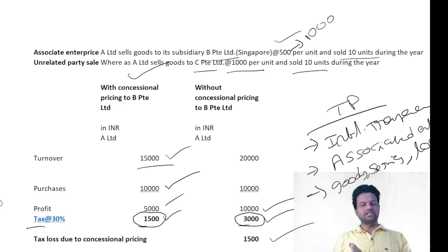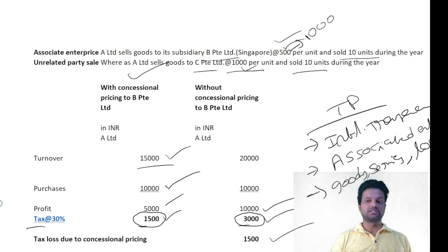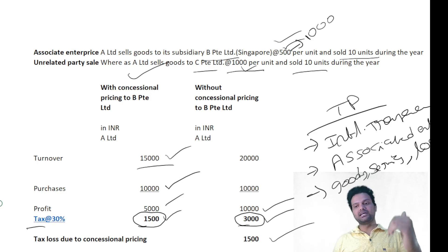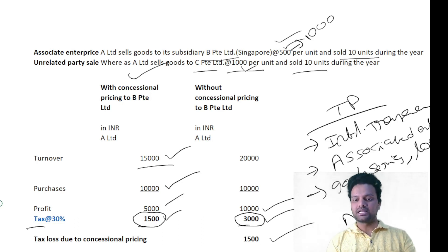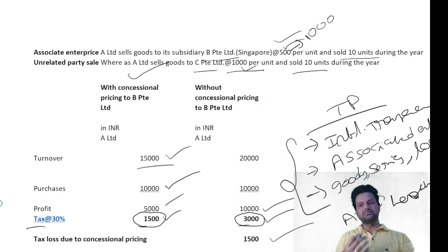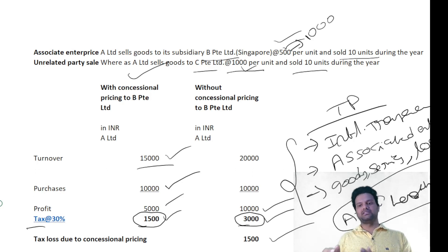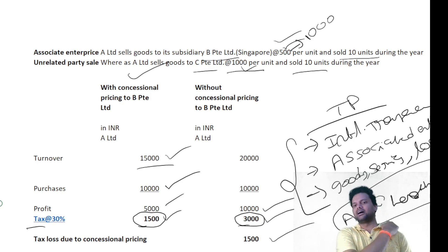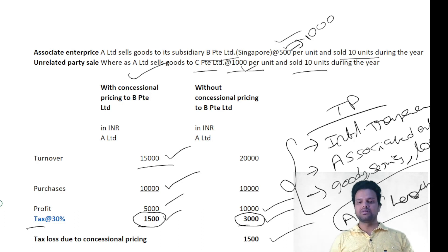When these provisions are applicable, the assessing officer looks at the transaction. In our example, I used two prices — 500 and 1,000. The central government applies the 1,000 rupee price for the transaction between A Limited and BPT. The technical term used for this is Arms Length Price, also called ALP. Just as you measure someone's height using shoulder height — that is arms length height — here they are measuring price, so it is called Arms Length Price.